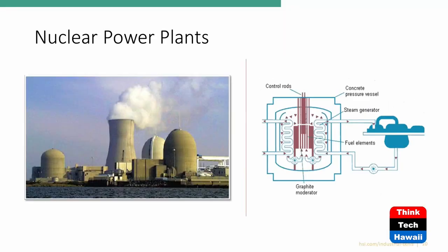Nuclear power uses a nuclear reaction to heat water, creating steam that goes to a steam generator, spins a steam turbine, which spins a generator to produce power — the same process as a boiler system. What changes is the heat source: a nuclear reactor instead of combustion.